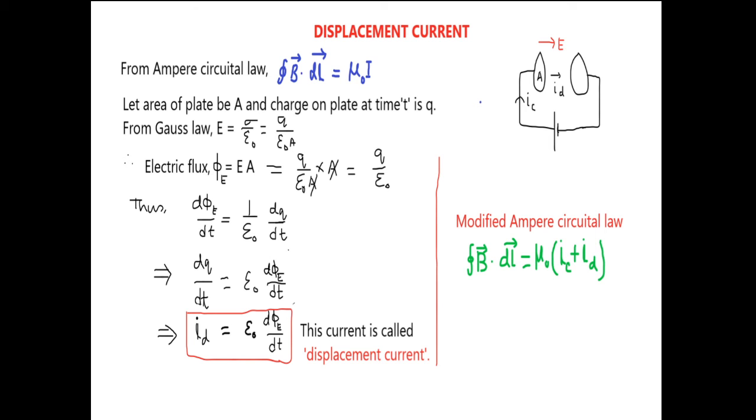Now the Displacement Current. From the Ampere circuit law, line integral B dot dl is equal to mu naught times of current enclosed.